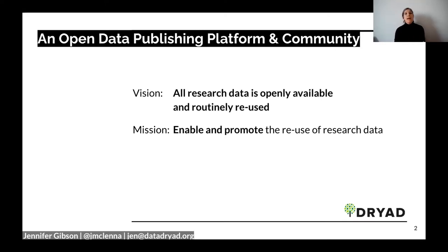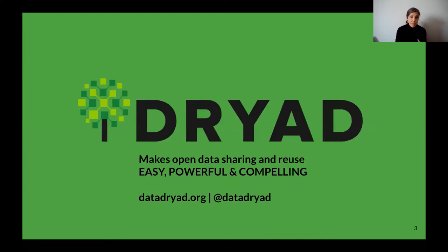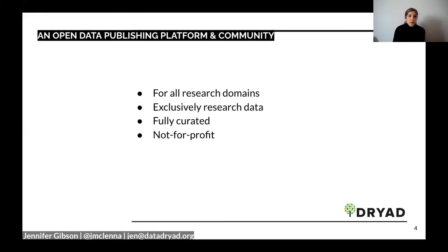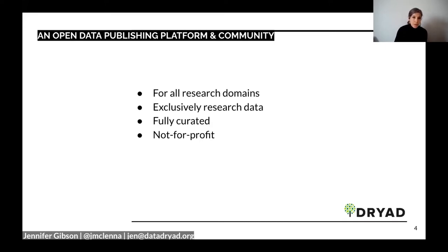We are a generalist open data publishing platform. We publish data across all disciplines, but our emphasis is on data that doesn't already have a home in a specialist repository. We publish exclusively research data — we no longer take supplementary information or software, and we partnered with Zenodo to make that happen. The data we publish is fully curated by a trained team. Dryad is a not-for-profit organization, and today the platform has over 43,000 data publications associated with the work of over 175,000 researchers, 32,000 institutions, and 1,200 academic journals.